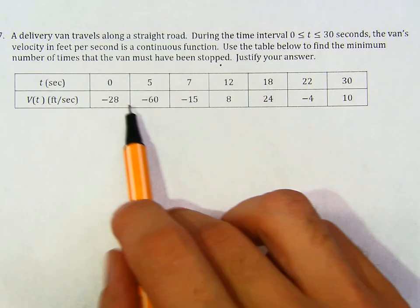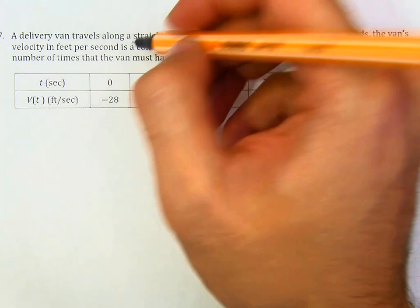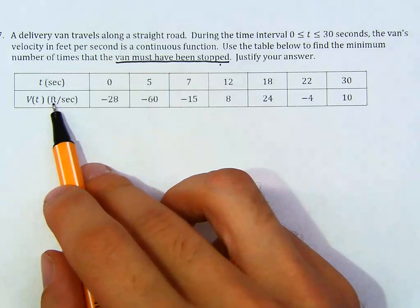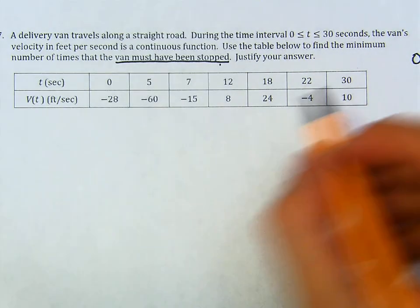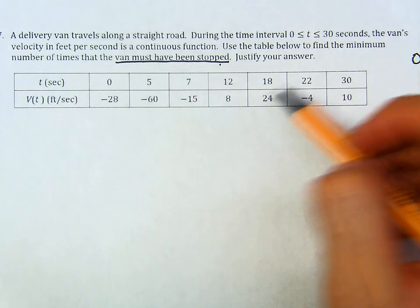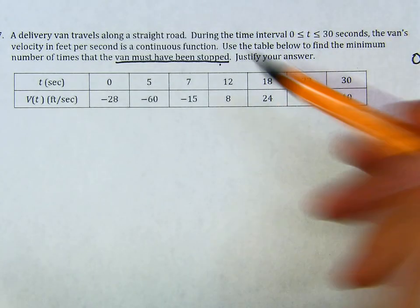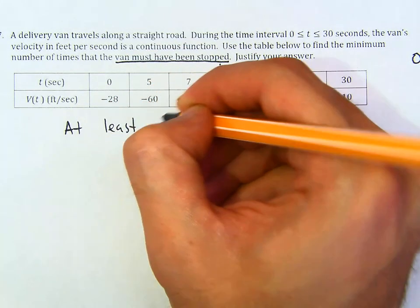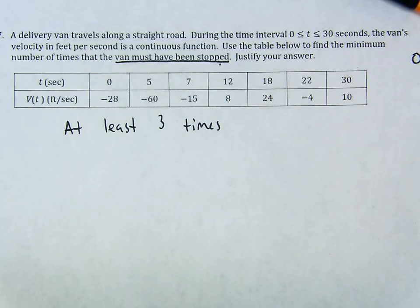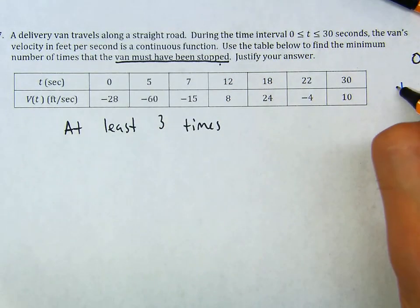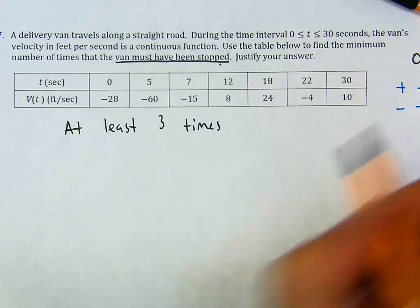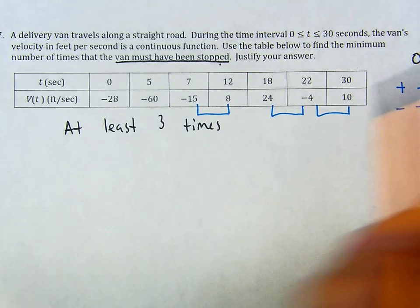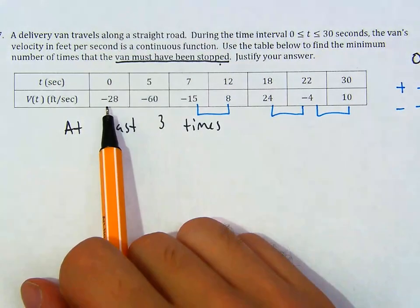For a van to stop, the velocity needs to be zero. This is asking: how many times does the velocity function hit the x-axis? The answer should be at least three times. The idea is: when does the velocity change from positive to negative, or negative to positive? It changes here, here, and here — three sign changes.